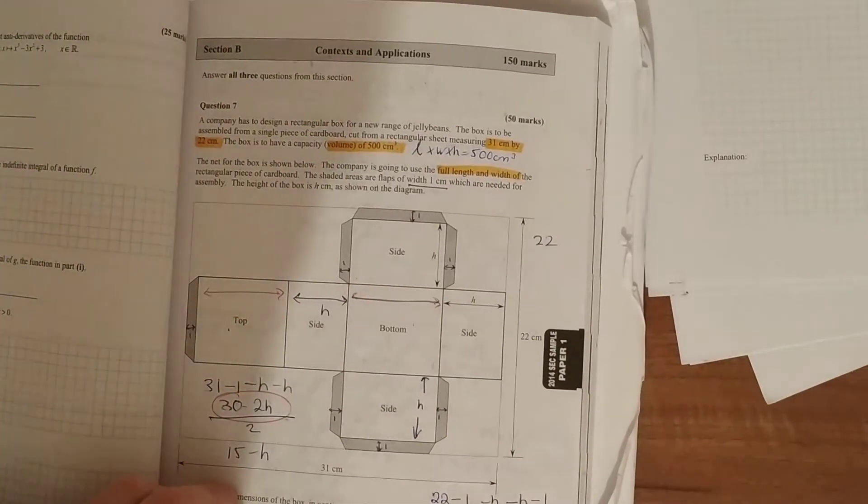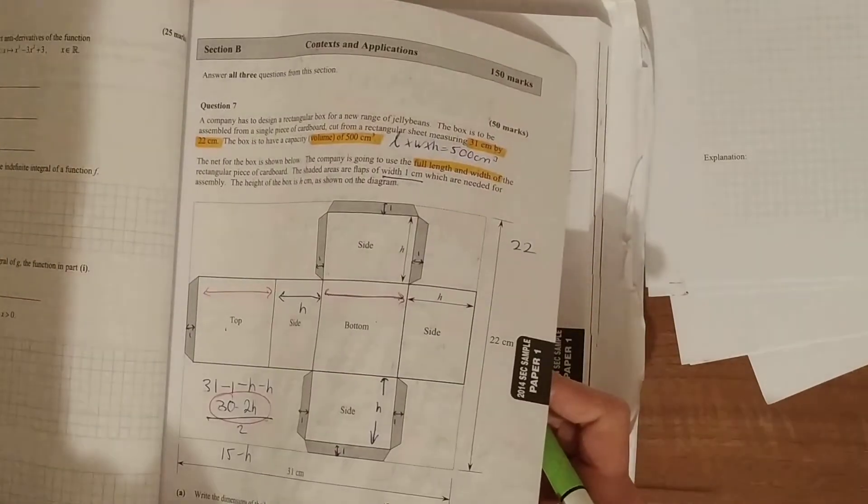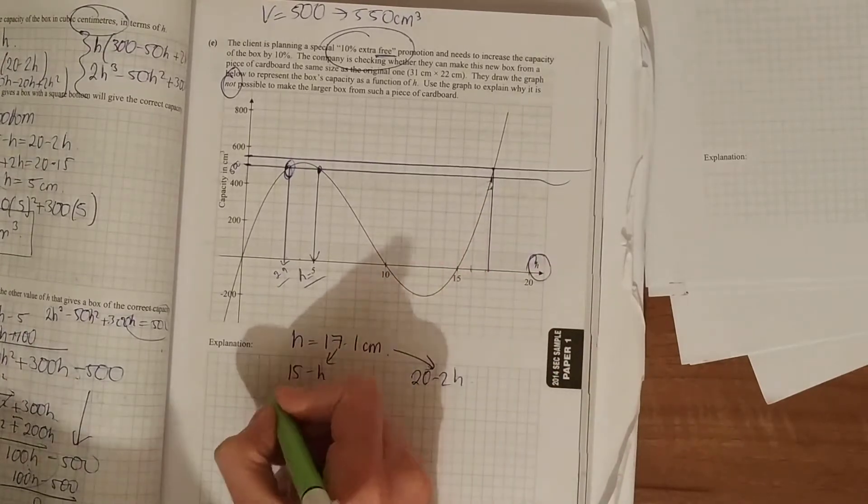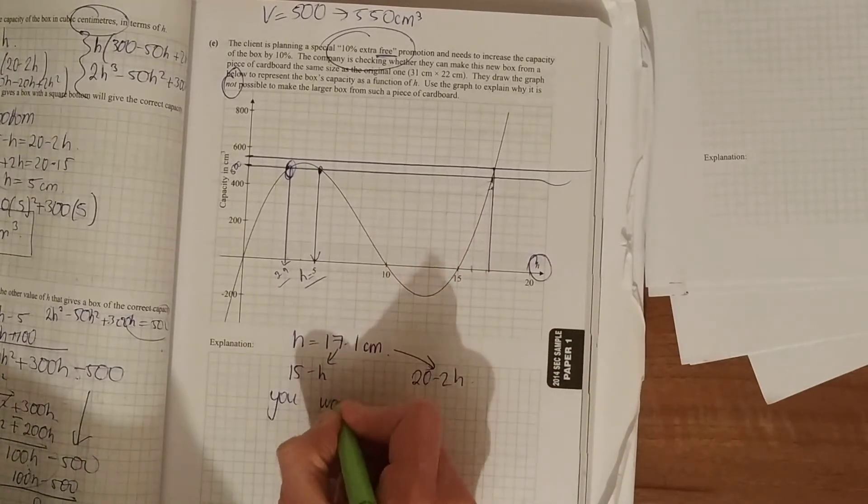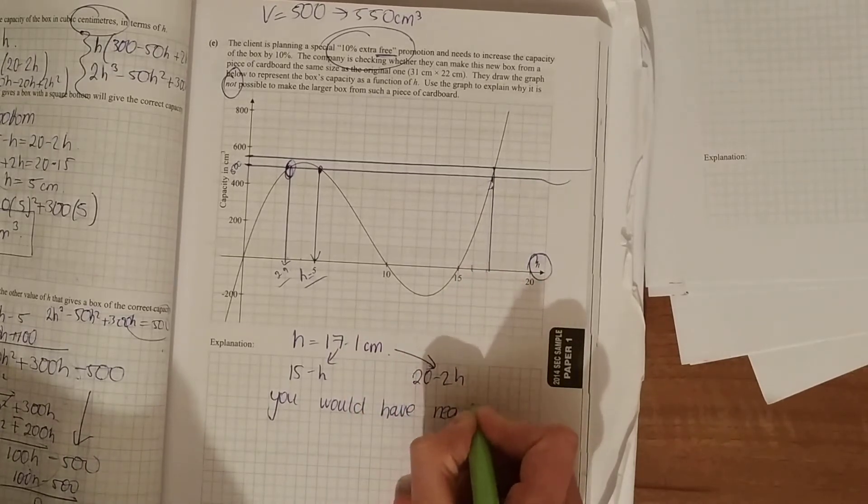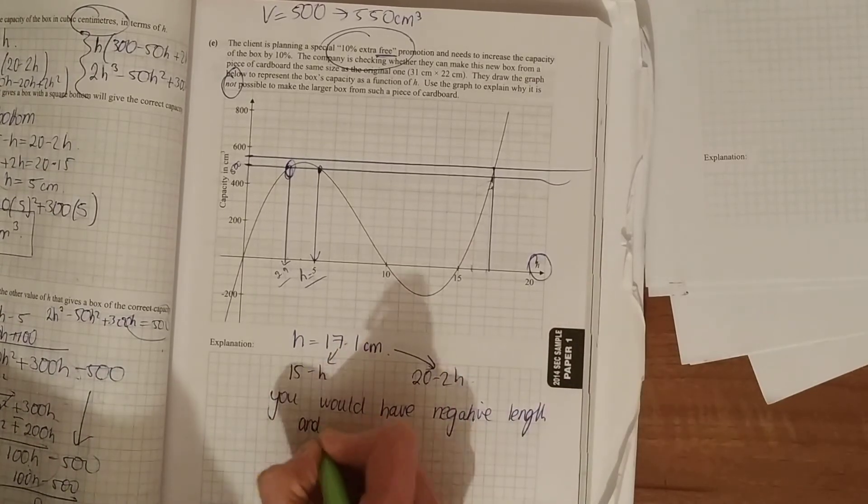Now you can't have a value of 17.1 because, as we said, one of our lengths is 15 minus h and the other, or width, is 20 minus 2h. Now if you were to sub each of these into that there, you would have negative length and width, but you cannot have that, so it doesn't work.